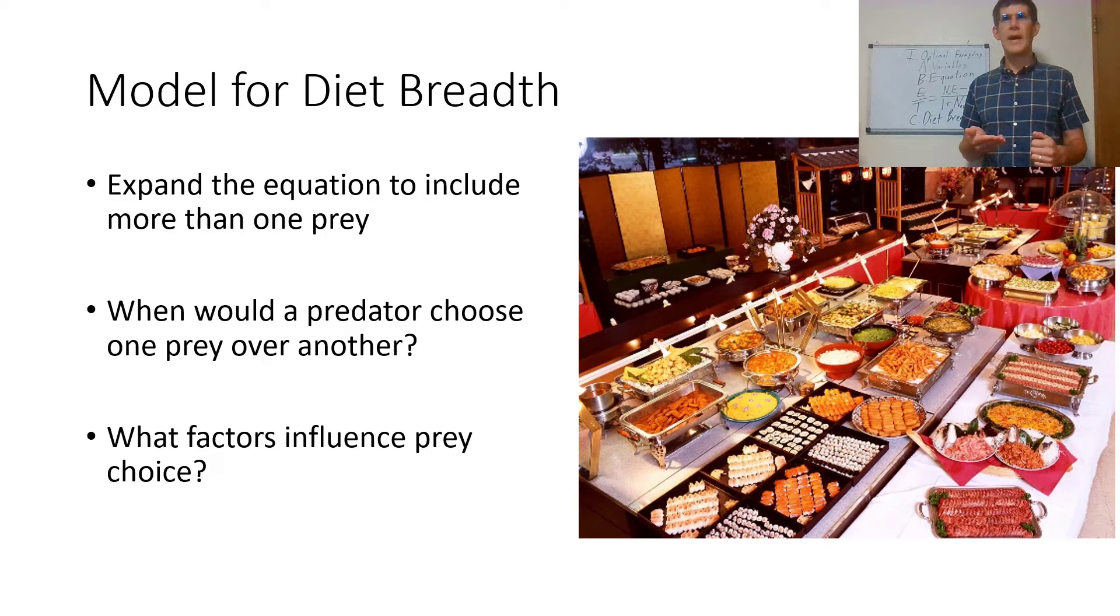Think about when a predator would choose one prey over another. If, for example, you had walnuts, peanuts, and almonds all still in their shell, and you had to pick what to eat, you'd probably pick the peanuts if you didn't have any nut opening device, because that's the least handling time for the most energy.